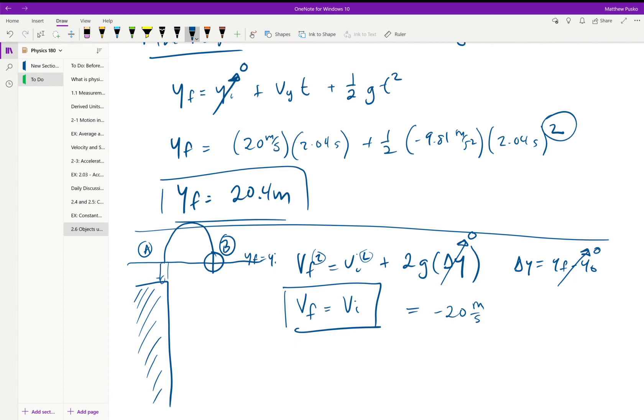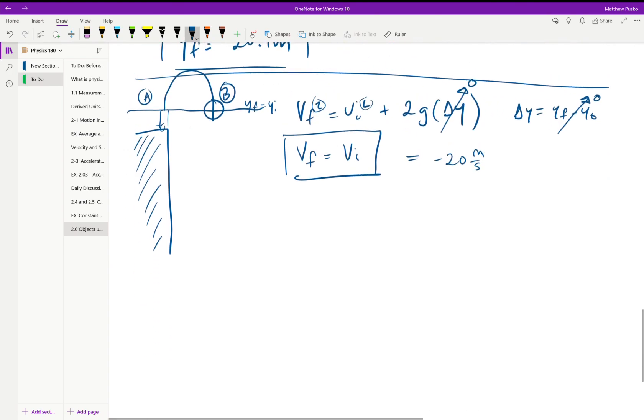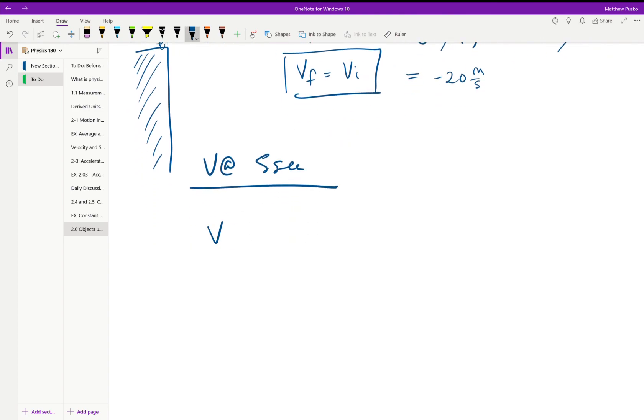All right, what else? We wanted to find the velocity at five seconds. We can do that by just doing v final is equal to v initial plus the acceleration times time, where the acceleration is gravity.